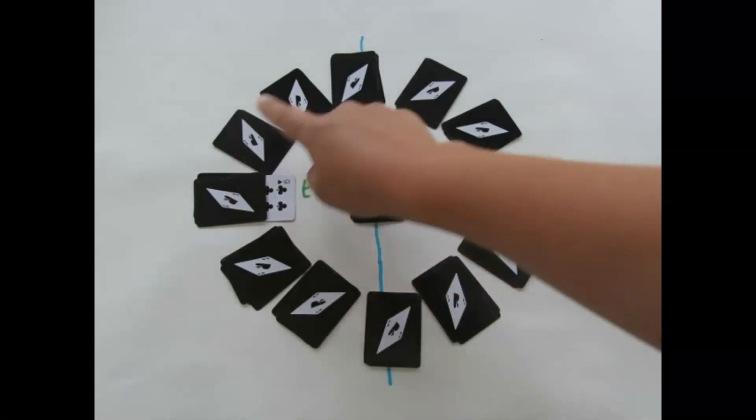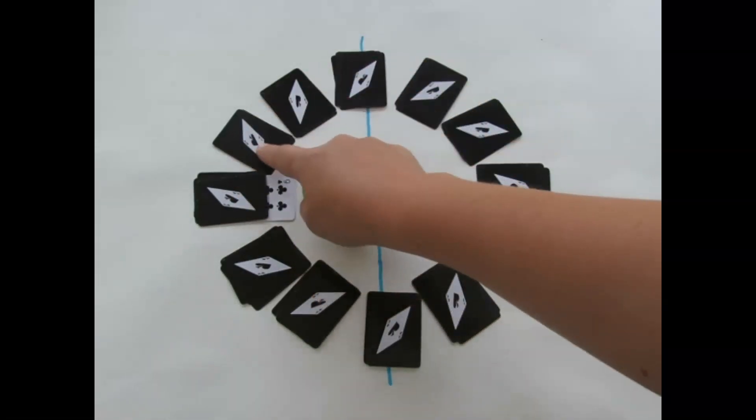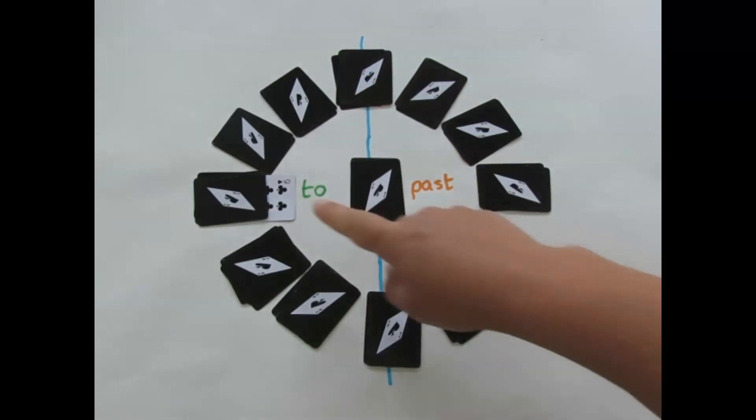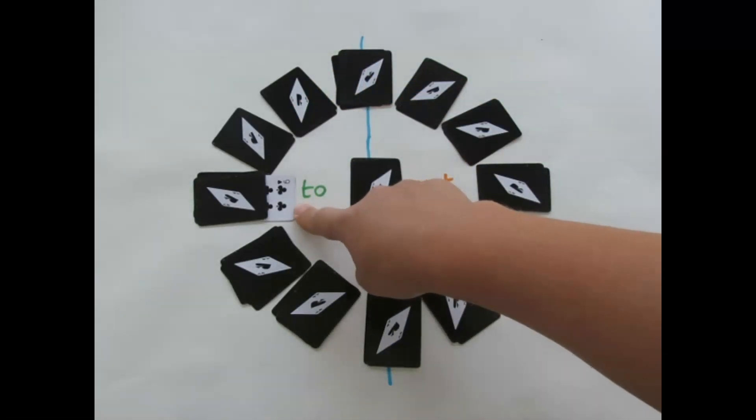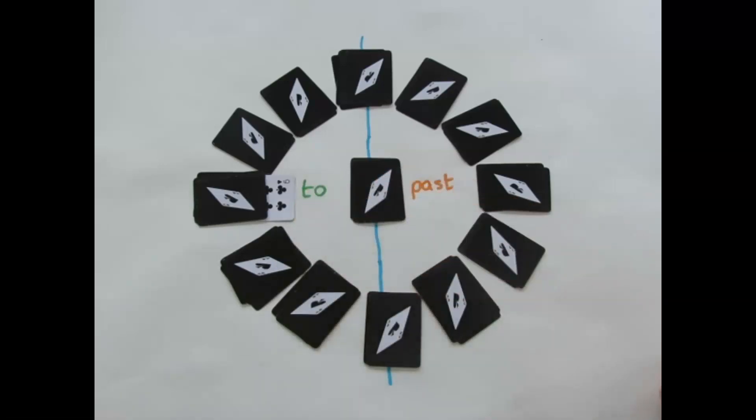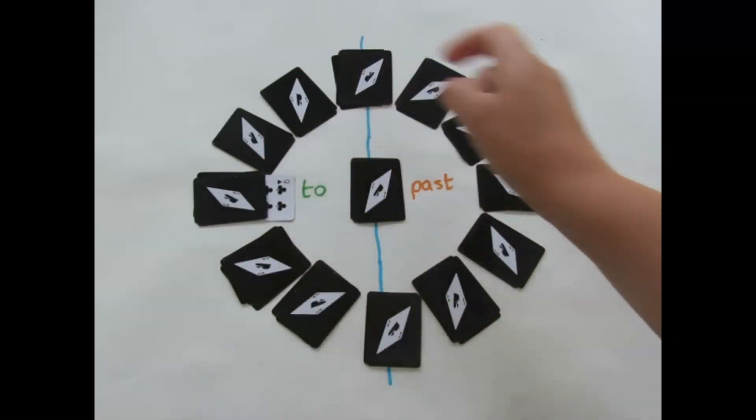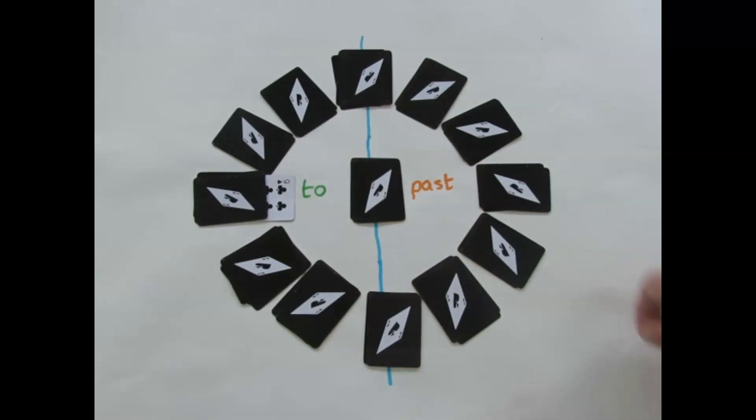But we can also then do the minutes to. So we can say well it's five, ten, fifteen minutes to the next hour. And of course nine also represents the quarter to. So when they play that card you'd want them to try and tell you all three of those facts. So it's 45 minutes past that hour. It's 15 minutes to the next hour that we say is quarter to.